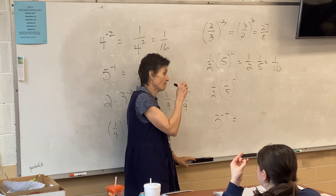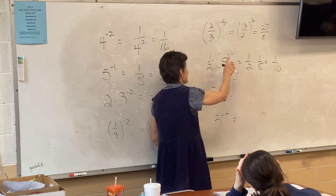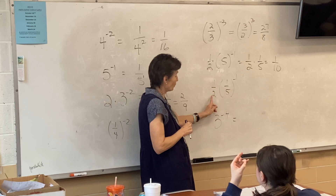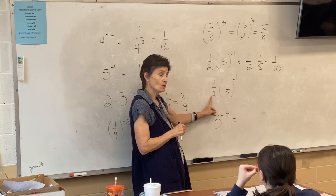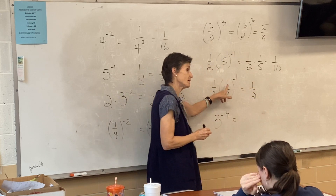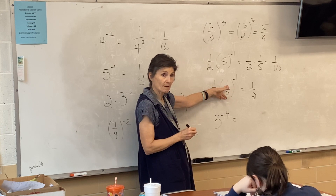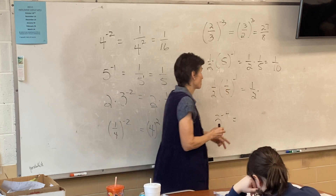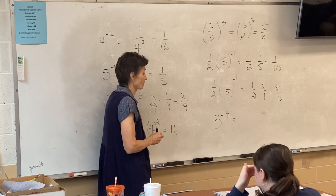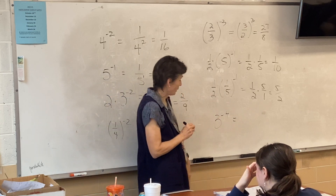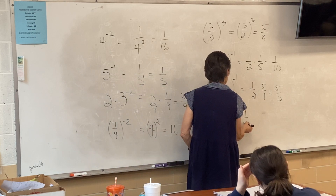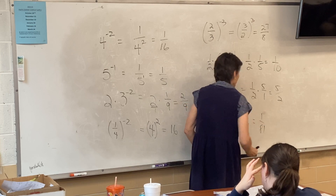We're only flipping or one-overing things that have negative exponents. So when I look at the next problem, will I flip the one-half? Nope, the one-half stays, but the five flips and becomes five. So that one is five halves. Three to the negative four is one over three to the fourth, which is one over 81.